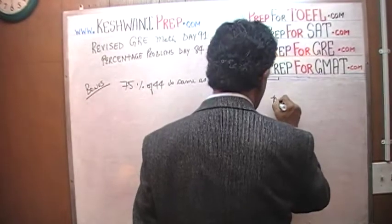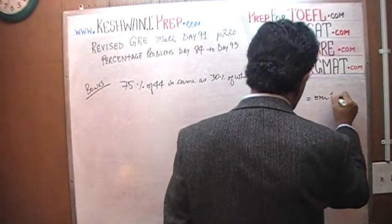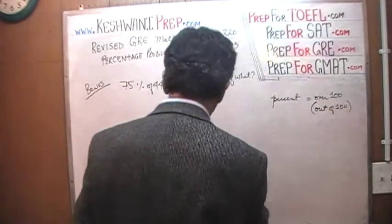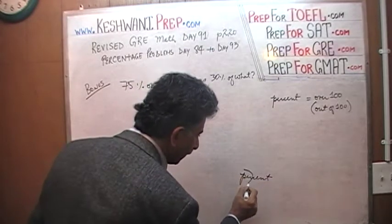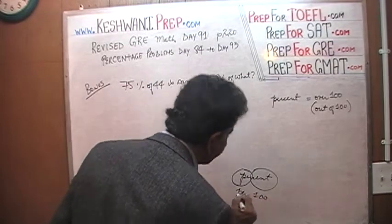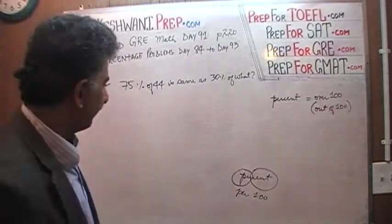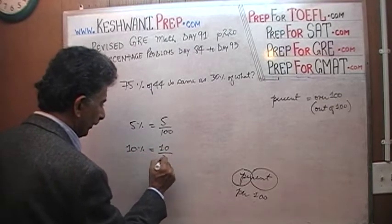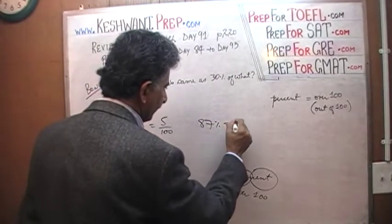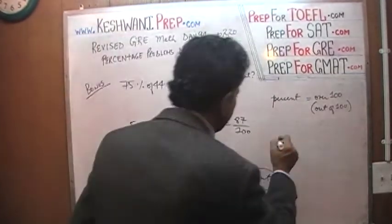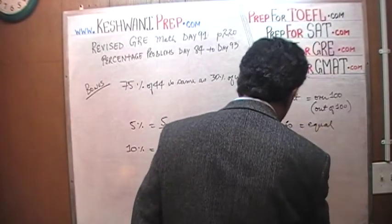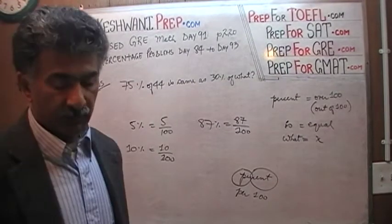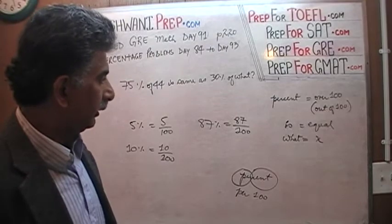Percent means over 100, or out of 100. So wherever we see the word percent, that means over 100. If it says 5%, that means 5 over 100. If it says 10%, that means 10 over 100. If it says 87%, that is 87 over 100. Is means equal. Wherever we see the word 'what', that is our unknown — traditionally represented with an X.